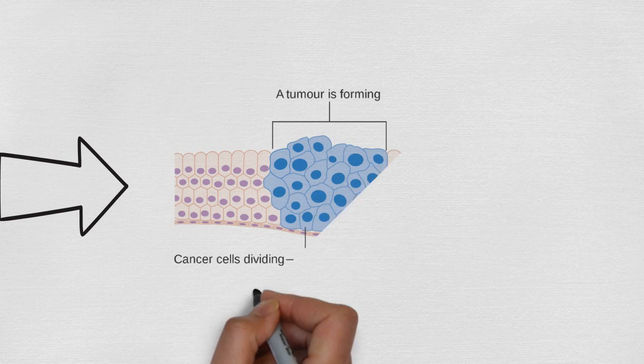Throughout our lives, the cells in our bodies grow and divide. But when cells start growing and dividing uncontrollably, they become cancerous.